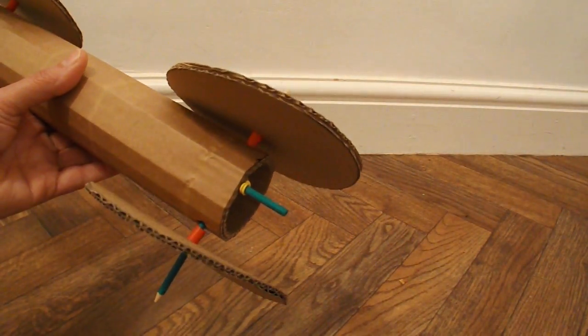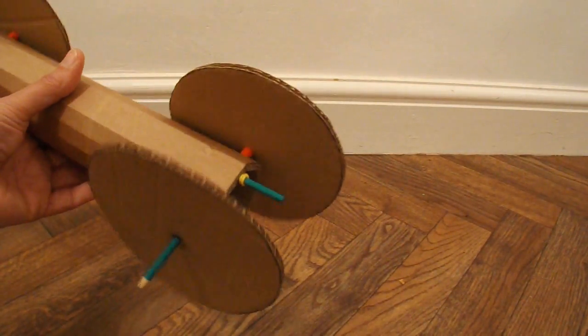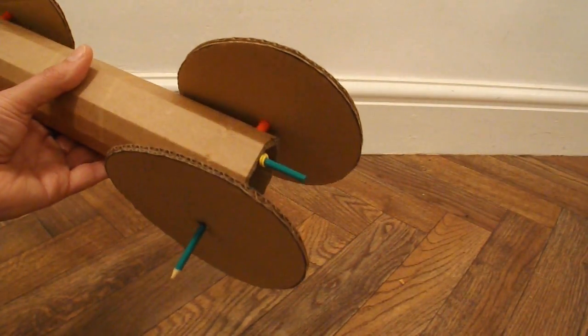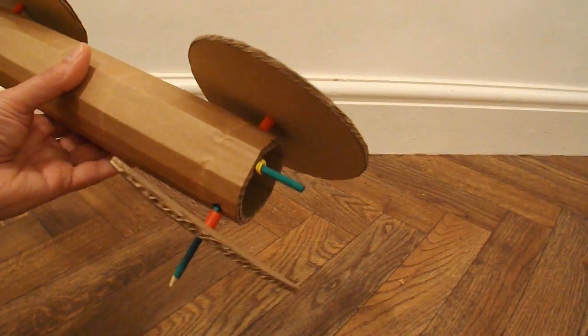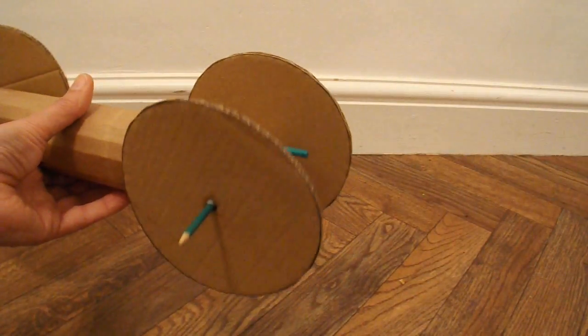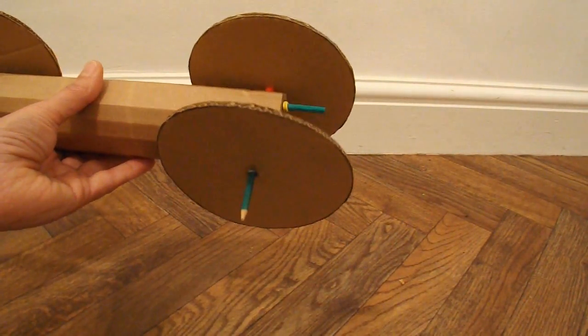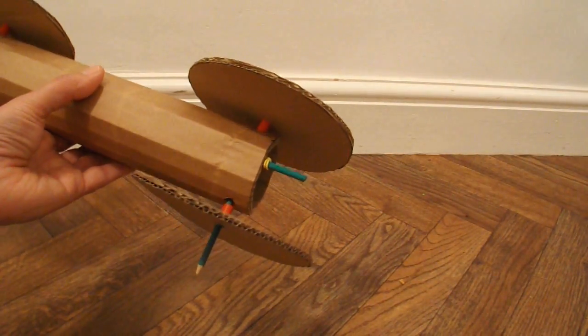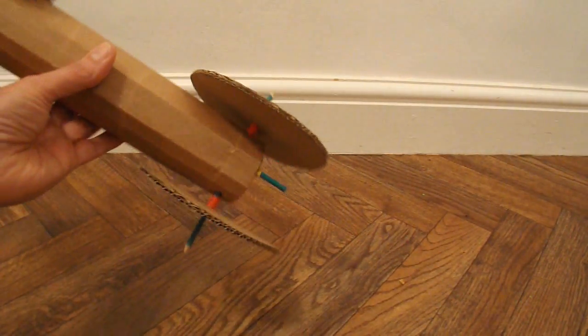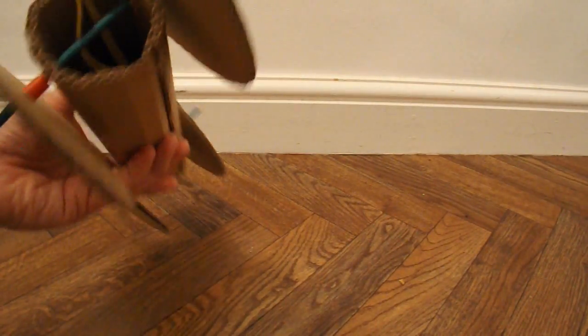The glue that I used is ordinary PVA glue as it's called. It's just that white stuff that you tend to use in schools for gluing paper and cardboard and that sort of thing together. So there's nothing special there. No hot glue or anything like that. And that's it.